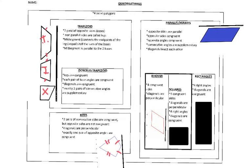Another group of quadrilaterals are parallelograms. In a parallelogram, opposite sides are parallel and congruent, opposite angles are congruent, consecutive angles are supplementary, and the diagonals bisect each other. Those are all the key characteristics of parallelograms.